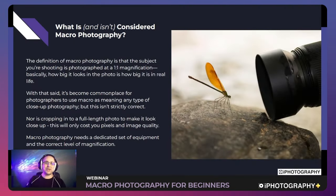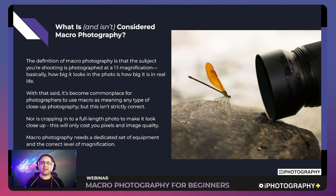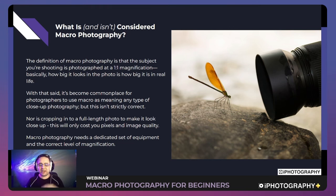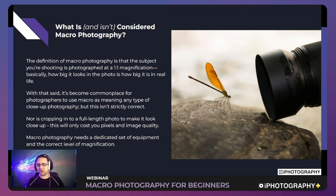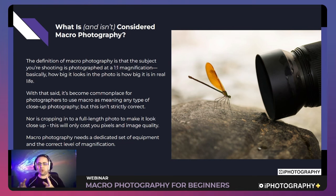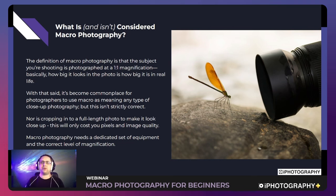In terms of the definition, macro photography is basically shooting a subject at life size — what we refer to as a one-to-one ratio magnification. This means the subject you're photographing appears life size in the image. Some people do mix genuine macro photography up with just getting closer to an object in general. Hopefully example images throughout this webinar will clarify what macro photography truly is.